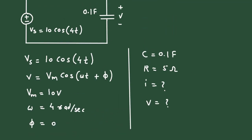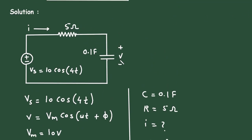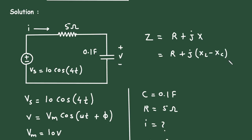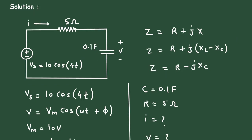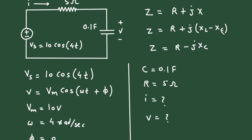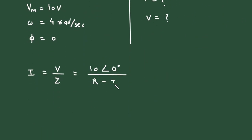Impedance Z is given by — here we can see the resistor and capacitor are connected in series. So impedance Z = R + jX, where R is resistance and X is reactance, or we can write Z = R + j(XL − Xc). Here XL = 0 because there is no inductance, so Z = R − jXc.